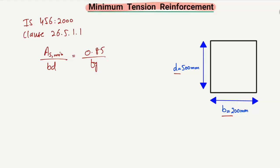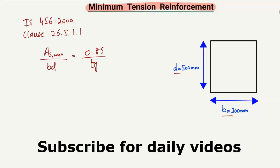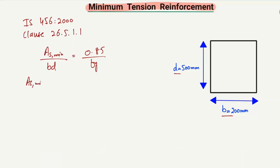To find out the minimum reinforcement for this beam cross-section, we should know the different parameters in this equation. As_min is the minimum area of tension reinforcement, and B is the width of the beam.